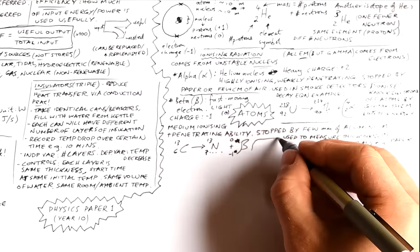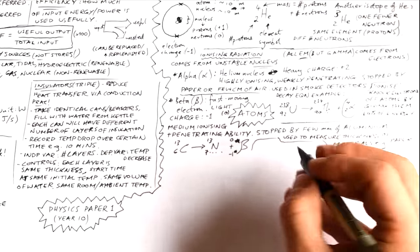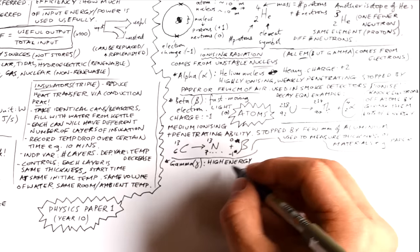We can use beta to measure the thickness of materials, say in a paper mill.